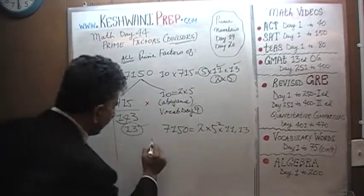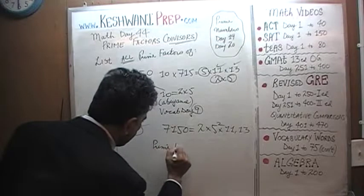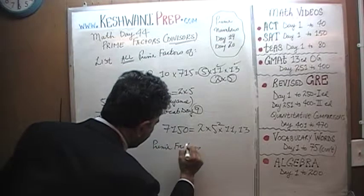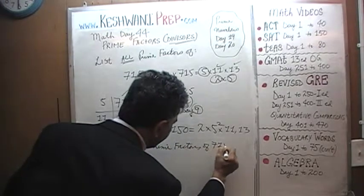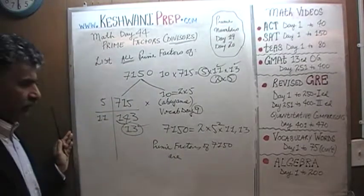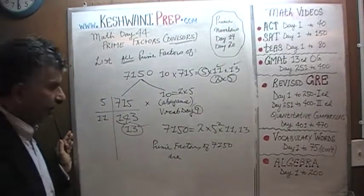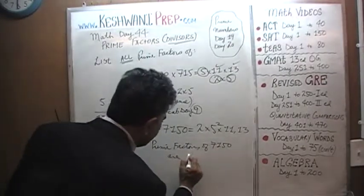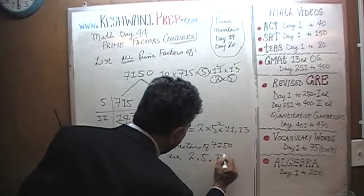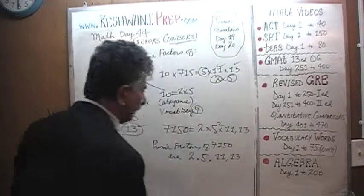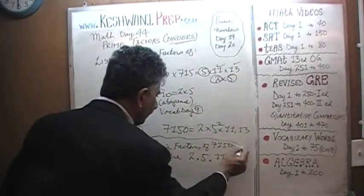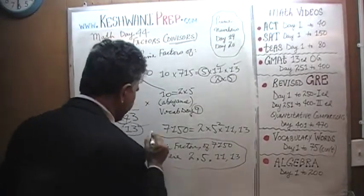Therefore the prime factors of 7,150 are 2, 5, 11, and 13. It has 4 prime factors.